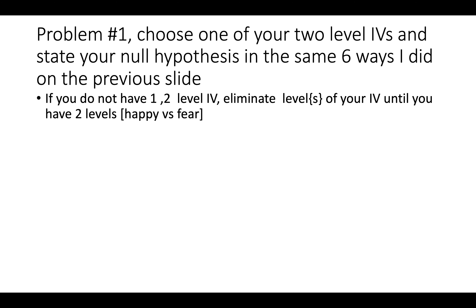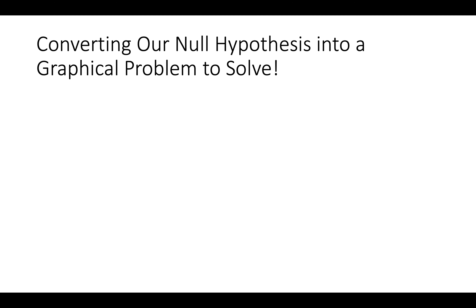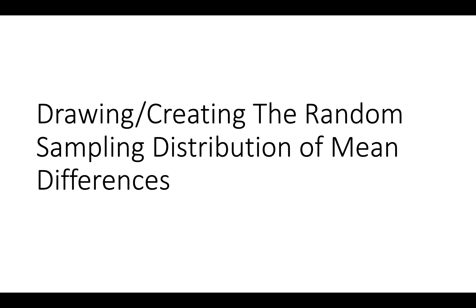Practice: homework problem one — choose one of your two-level IVs and state your null hypothesis in the same six ways shown. Note: if you don't have a two-level independent variable, eliminate levels until you have two. Now we know what the null hypothesis is and we have to convert it into a graphical problem to solve. The first step is creating our bell — drawing and creating the random sampling distribution of mean differences.